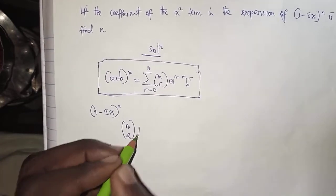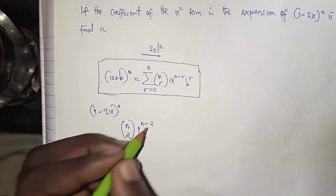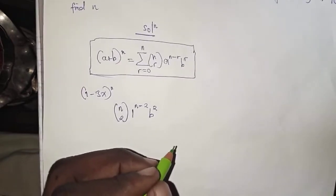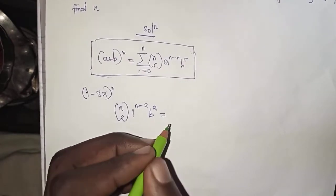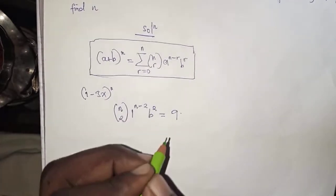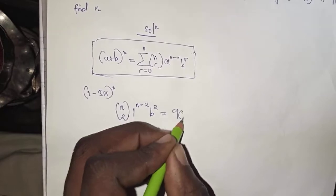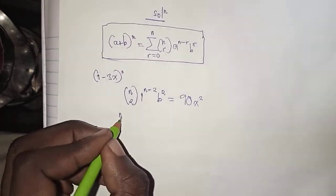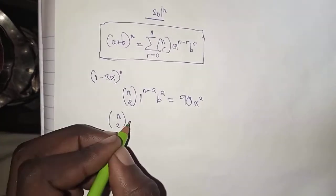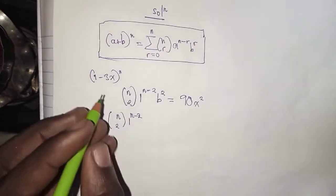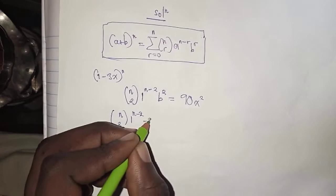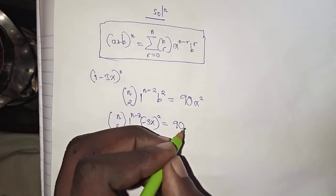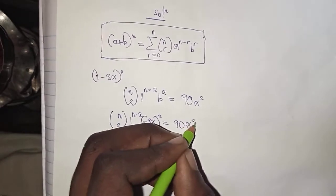We multiply with 1 raised to the power n minus 2, times b to the power 2. This is equal to the coefficient in the equation, which is 90x squared. So this gives us n choose 2, multiplied by 1 to the power n minus 2, multiplied by the value of b which is negative 3x, to the power 2, which is equal to 90x squared.